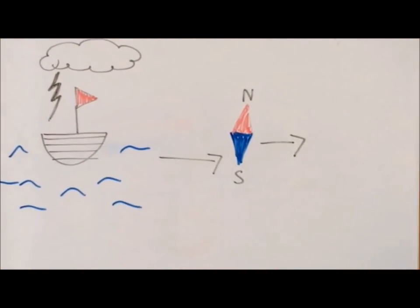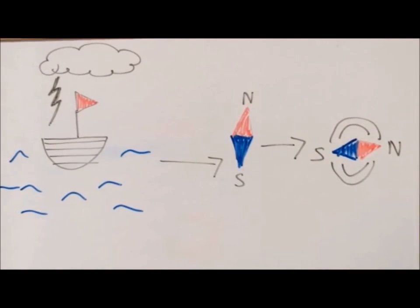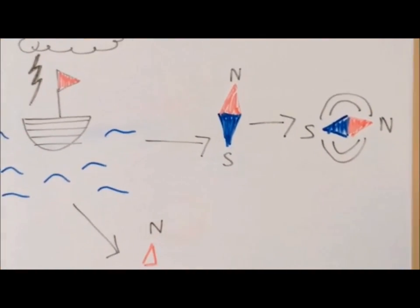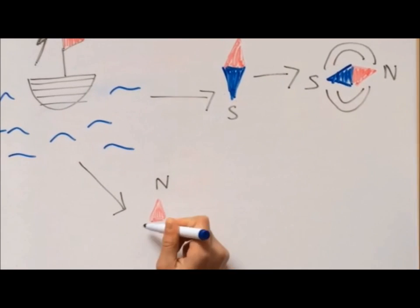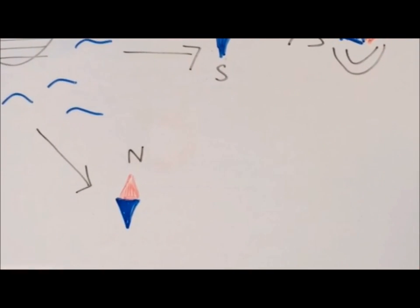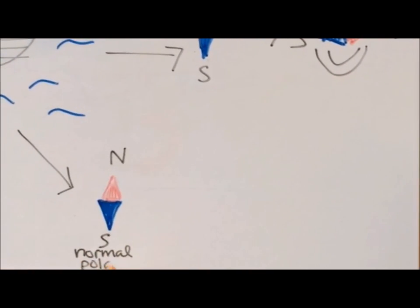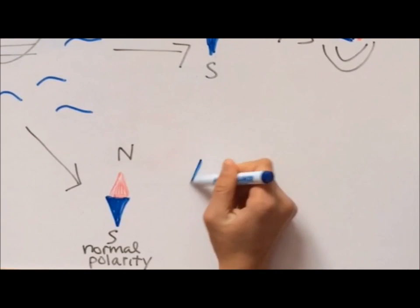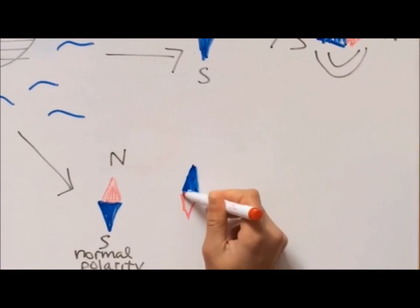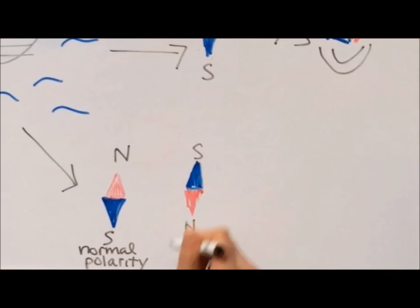Compasses are controlled by magnetic fields that surround them. When electrical storms occurred, the ship's entire navigational system would malfunction. When a compass is affected by lightning, it reverses the polarity, which is why they would malfunction. Instead of pointing north, the compass would flip and point south.